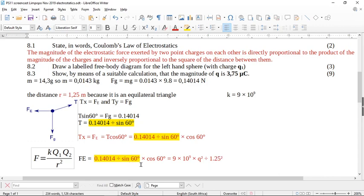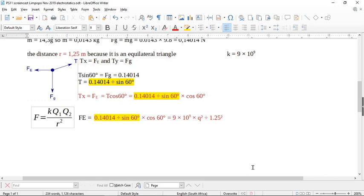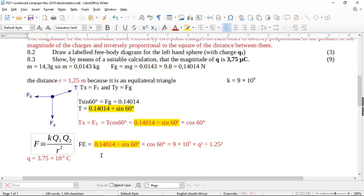So if you have a look here, on the left-hand side of the equation here, we've got a value. On the right-hand side, we've got a value, and the only thing that we are left to find is Q squared. So if you do all of the algebra on this, you should come out with Q equals 3.75 times 10 to the negative 6 coulombs, which is the same as 3.75 microcoulombs. And so then you have shown your calculation for the proof.